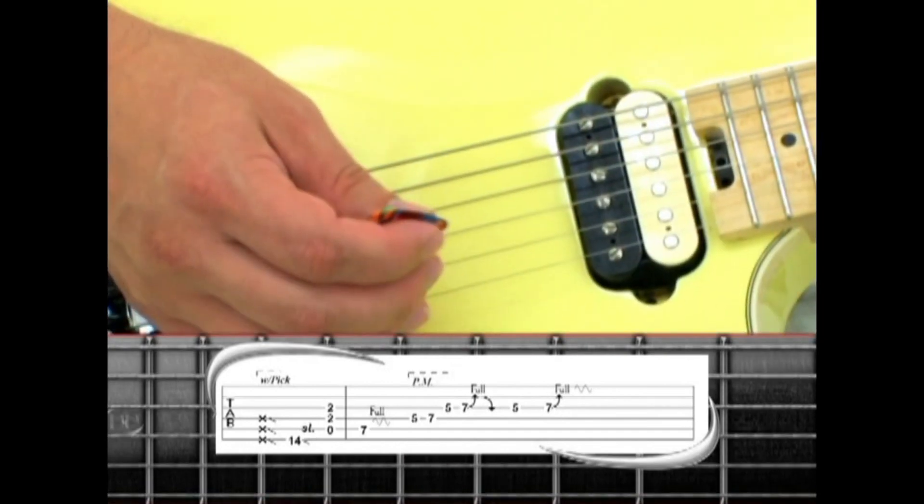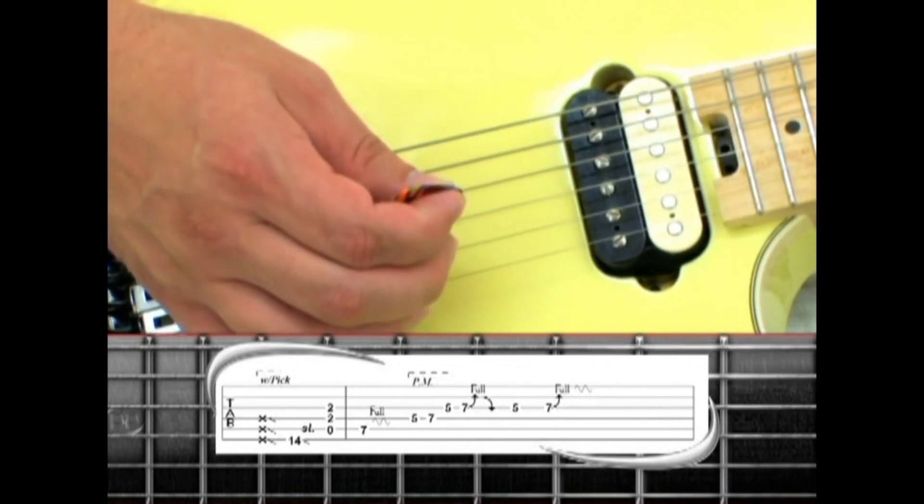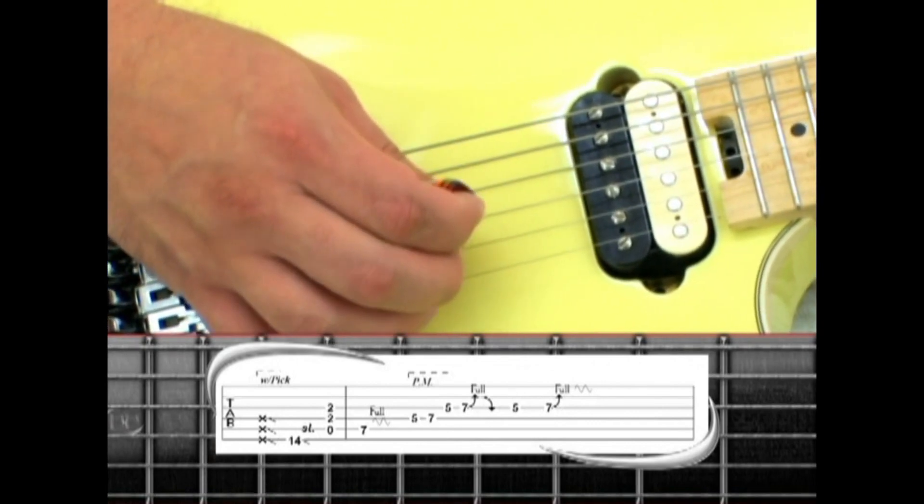To achieve the artificial harmonic, grab the pick very near to the tip and allow the skin of your thumb to touch the string as the pick does.